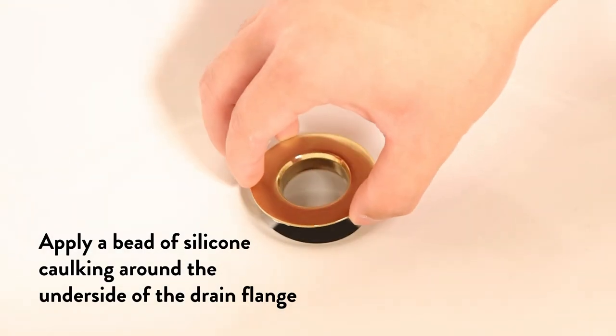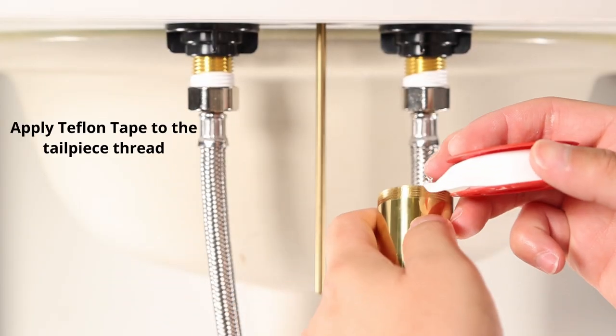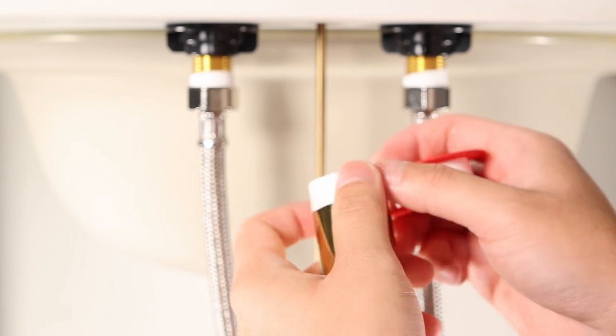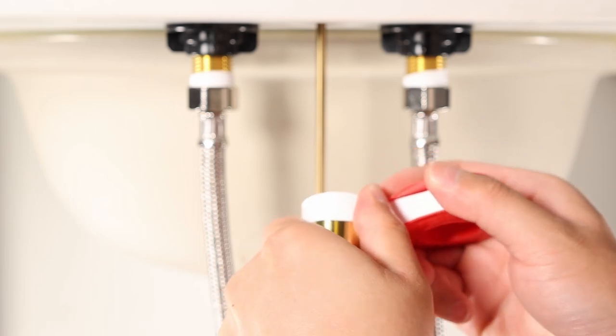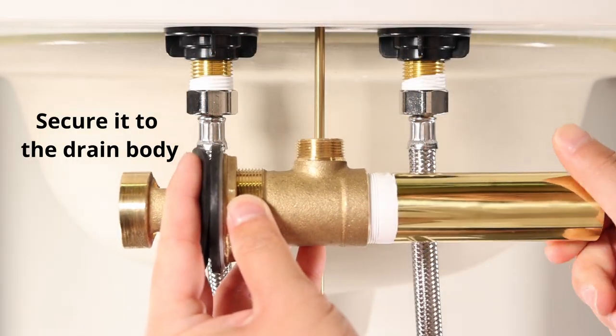Apply a bead of silicone caulking around the underside of the drain flange. Apply Teflon tape to the tailpiece thread. Secure it to the drain body.